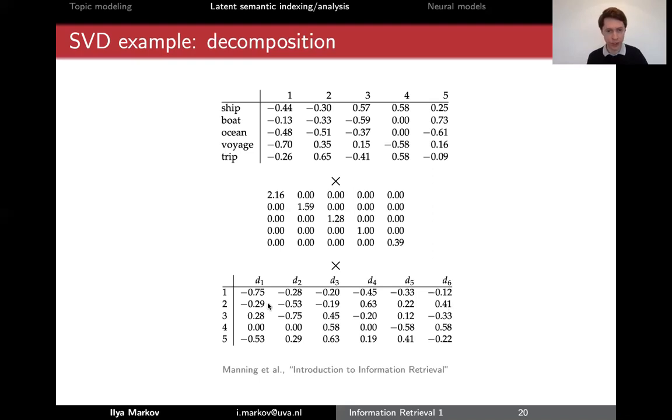Especially the second component distinguishes between the first three documents and the last three documents. So this talking about ocean and sheep and boat and this talking about voyage and trip. So the second component seems to be quite good separated between these two sets of documents.